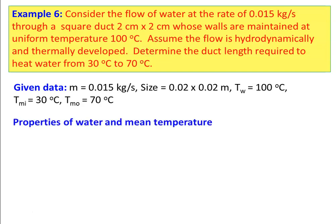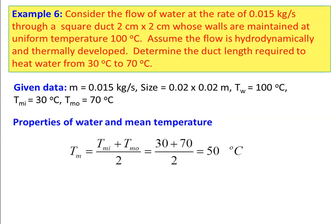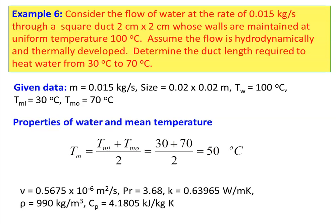We calculate the mean temperature: Tm = (TMi + TMo)/2 = (30 + 70)/2 = 50°C. Properties of water at 50°C: dynamic viscosity = 0.4675 × 10⁻⁶ m²/s, Prandtl number = 3.68, thermal conductivity k = 0.63965 W/m·K, density ρ = 990 kg/m³, specific heat = 4180.5 J/kg·K.